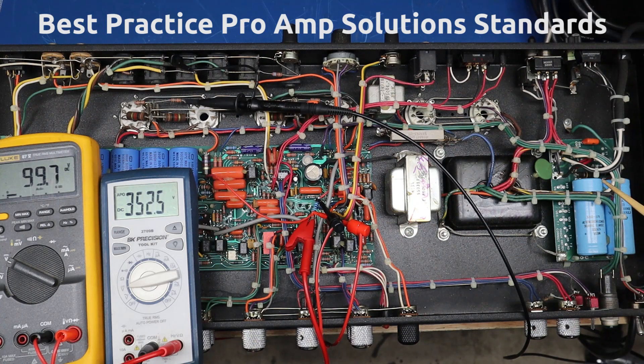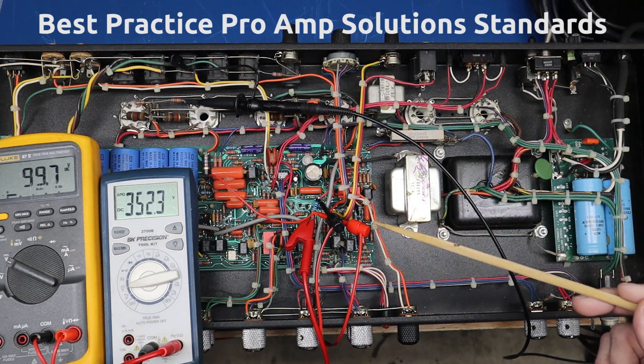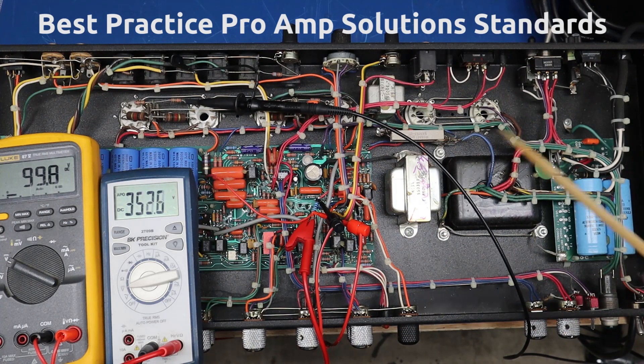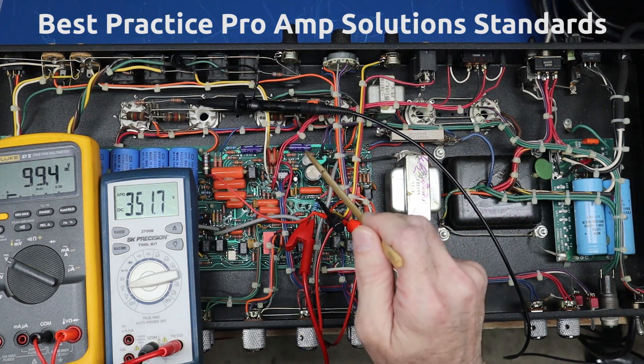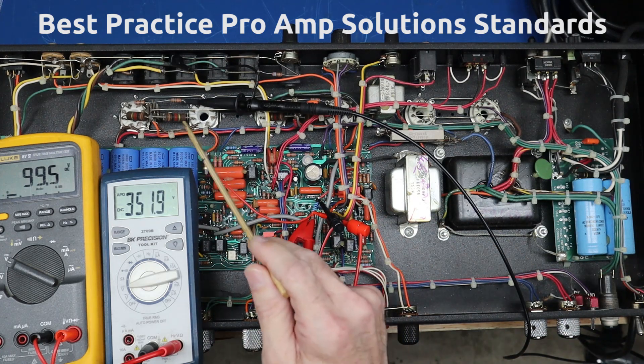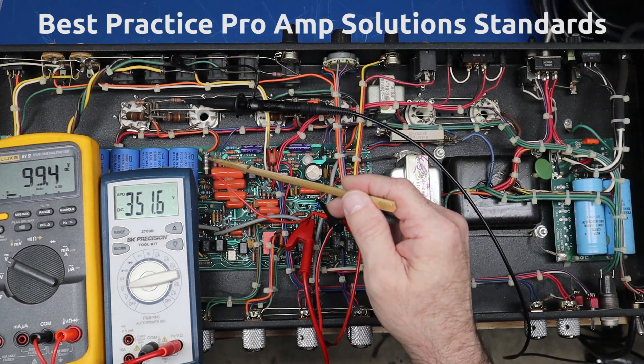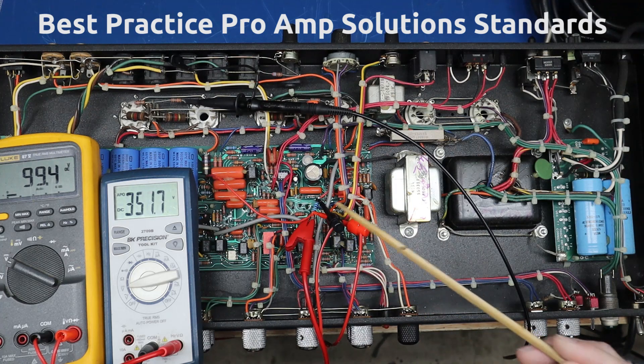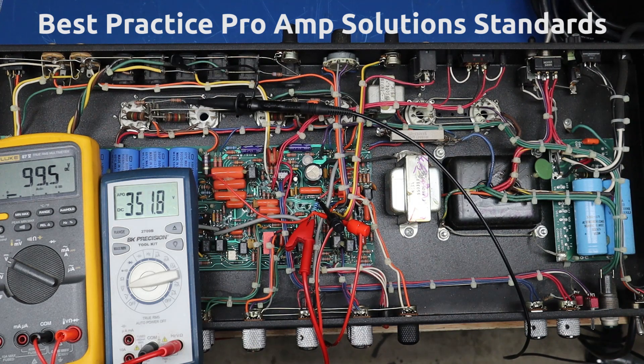And then these filter caps here are leaking a little bit and the noise floor is a little high. So to get this up to pro amp standards I'm going to replace all the filtration caps and probably these two 47 microfarad axial caps here. I'll probably replace all of those and then I'm definitely going to replace the carbon comp power tube screen resistors and then this voltage dropping resistor here. All those carbon comps I'm going to get rid of. I'm going to use nice wire wound resistors for all of those to get this up to pro amp solution standards.